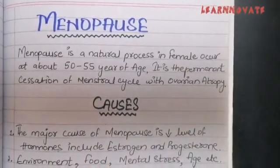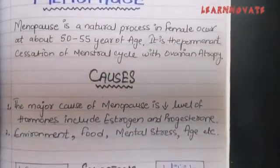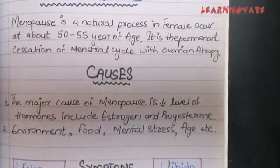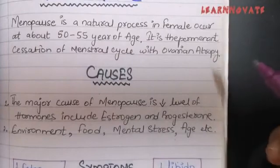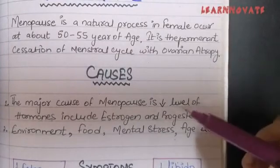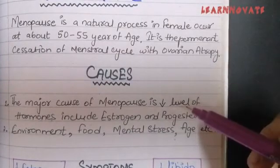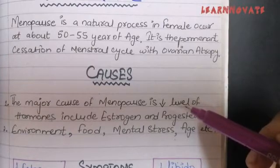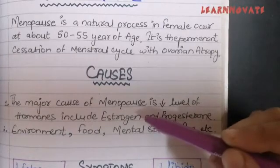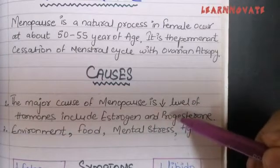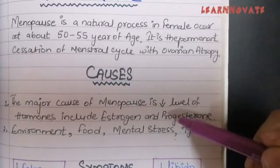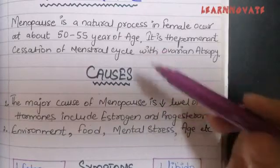Coming to the causes of menopause: the major cause is the low level of estrogen — the hormone important for pregnancy and the female menstrual cycle. Estrogen and progesterone are the two ovarian hormones that decrease in number, and their levels decrease significantly, causing menopause.